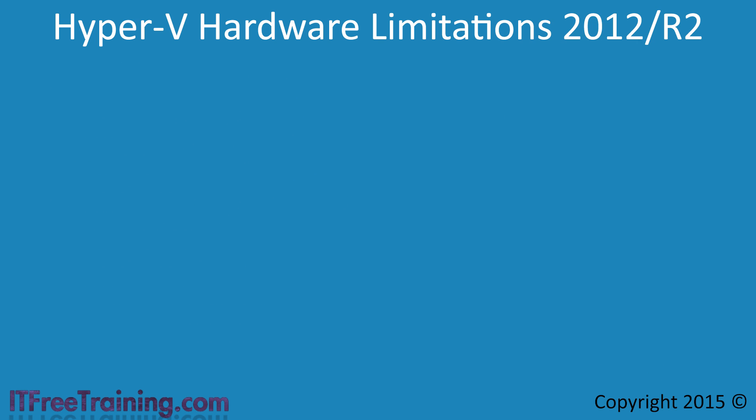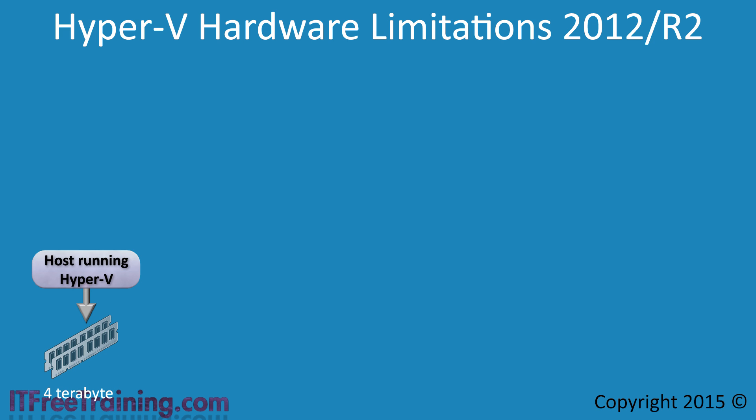I will next have a look at the hardware limitations of Hyper-V in Windows Server 2012 and Windows Server 2012 R2. For the host, Hyper-V will support up to 4TB of memory. If you run Hyper-V on Windows 8, this will be reduced to 512GB as that is all Windows 8 will support.